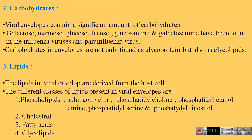The third important component of the viral envelope is lipids. The lipids in the viral envelope are mainly derived from the host cell, which is why the viral envelope is considered a typical biological membrane. The different classes of lipids present in the envelope are phospholipids, cholesterol, fatty acids, and glycolipids. The different types of phospholipids found in the viral envelope include sphingomyelin, phosphatidylcholine, phosphatidylethanolamine, phosphatidylserine, and phosphatidylinositol.